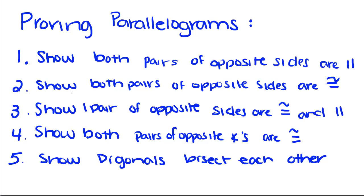We can show that both pairs of opposite sides are parallel. We can show that both pairs of opposite sides are congruent. We can show that one pair of opposite sides are parallel and congruent. We can show both pairs of opposite angles are congruent. Or we can show that diagonals bisect each other.